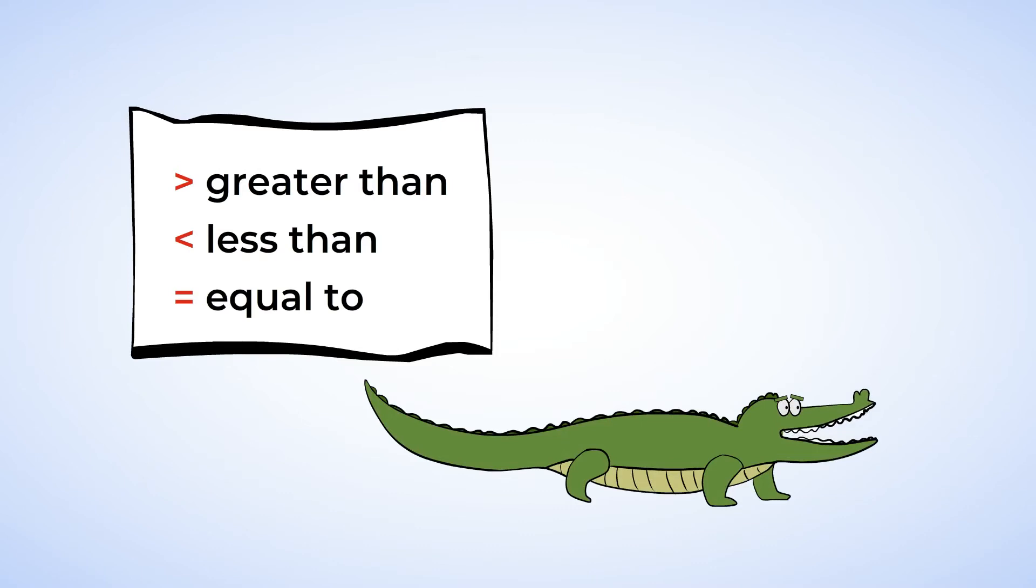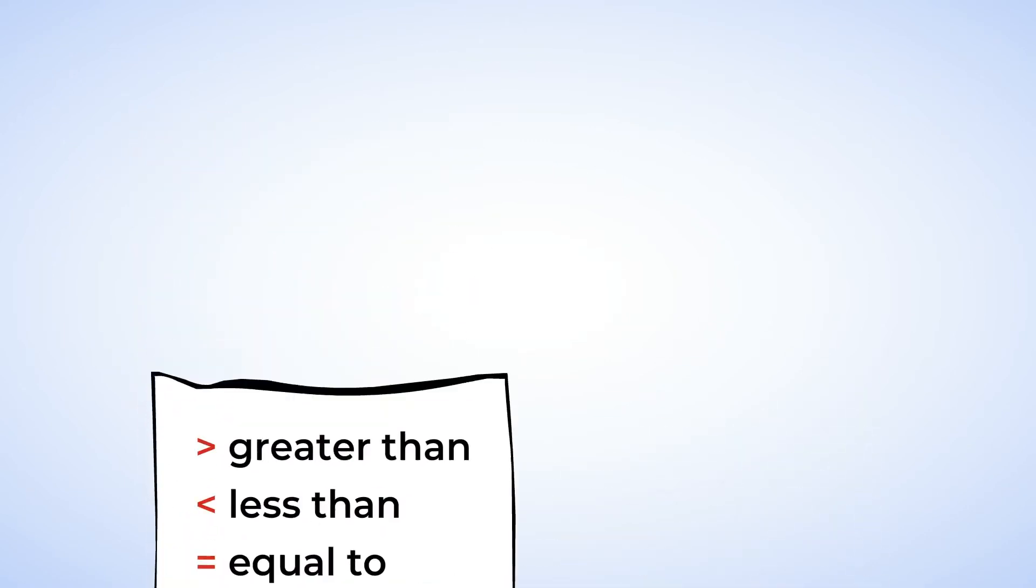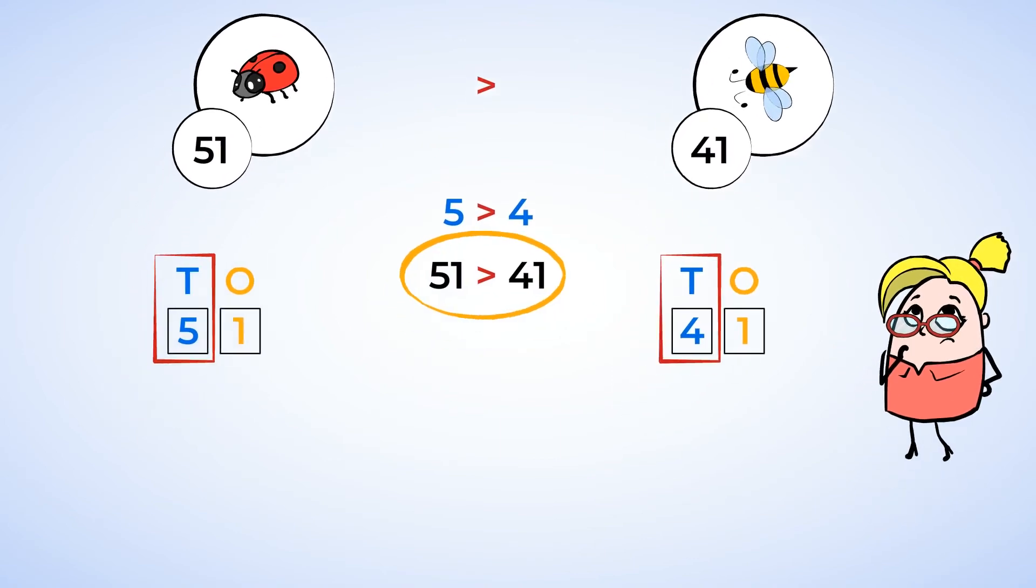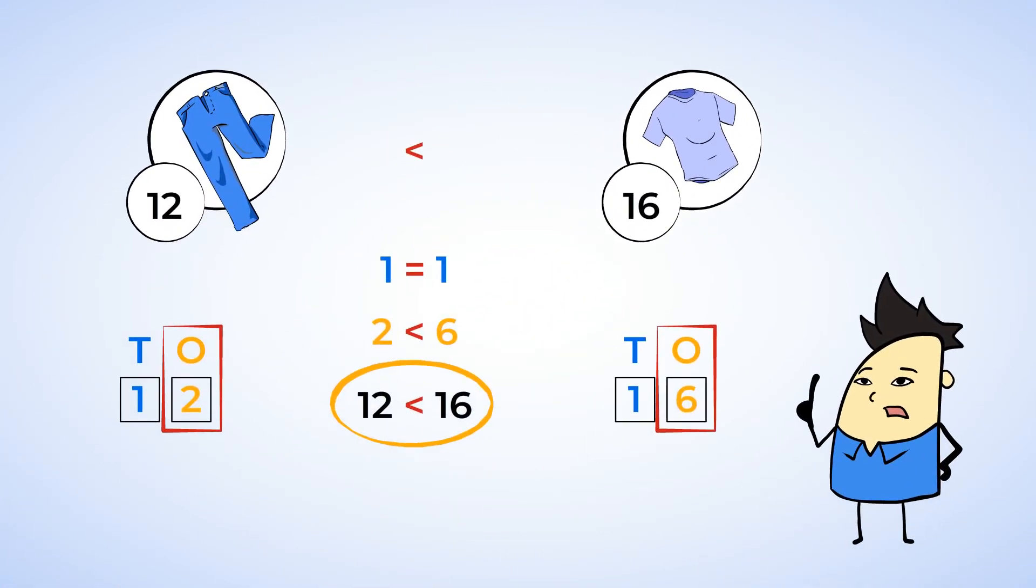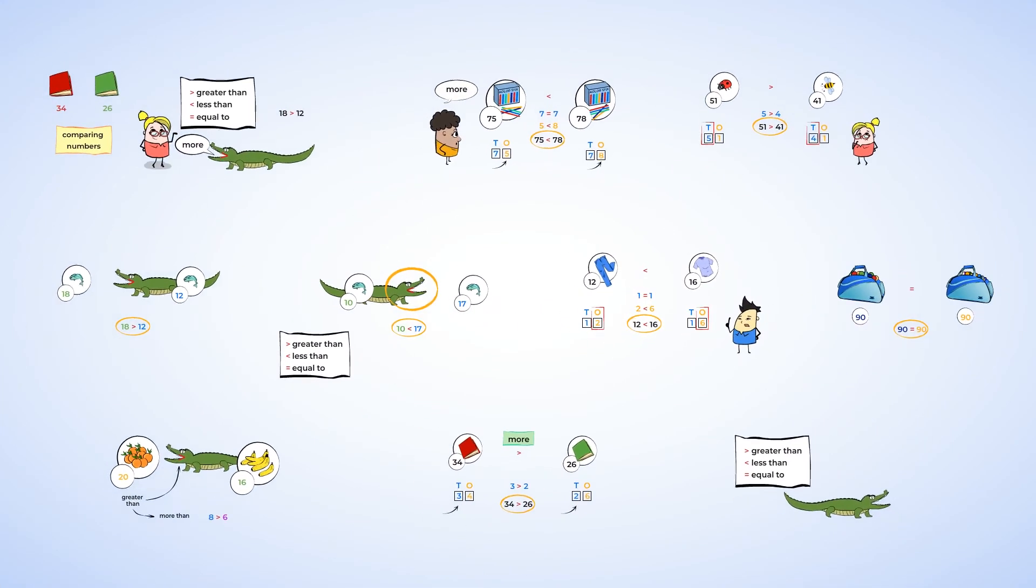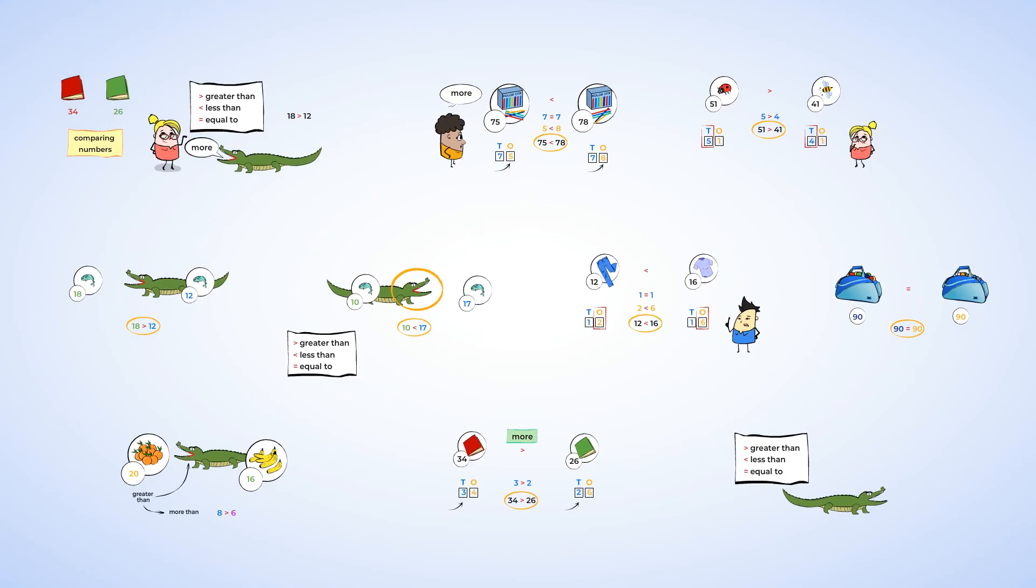If a number has two digits, use a place value chart to compare them. First, compare the tens. And if the tens are different, the number with more tens is the bigger number. But if the tens are the same, move on over to compare the ones. The number with more ones would then be the bigger number. You did a great job today comparing mighty numbers. See you next time!